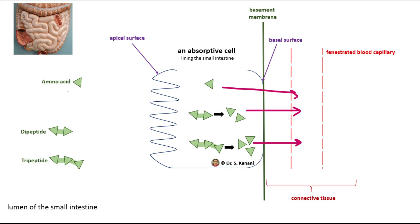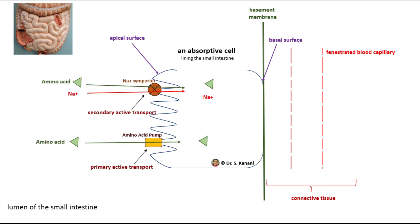Starting with individual amino acids, some amino acids are absorbed through the apical surface using proteins referred to as amino acid pumps. When we use a pump, it means this protein performs ATP hydrolysis — by breaking down ATP, it gets the energy to transport amino acids into the cell. This is primary active transport.